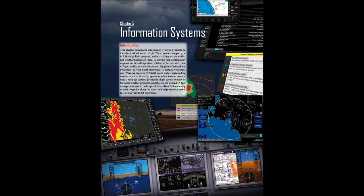Since the volume of information now available in the cockpit cannot be presented on a single display, or would clutter a single display to the point of unintelligibility, you must decide what information is needed at any given point in your flight. You will learn how information systems can be used to enhance situational awareness and increase the safety margin. It is important to avoid the pitfalls of using enhanced weather, traffic, and terrain information to fly closer to hazardous situations. This negates any safety advantage created by advanced avionics.